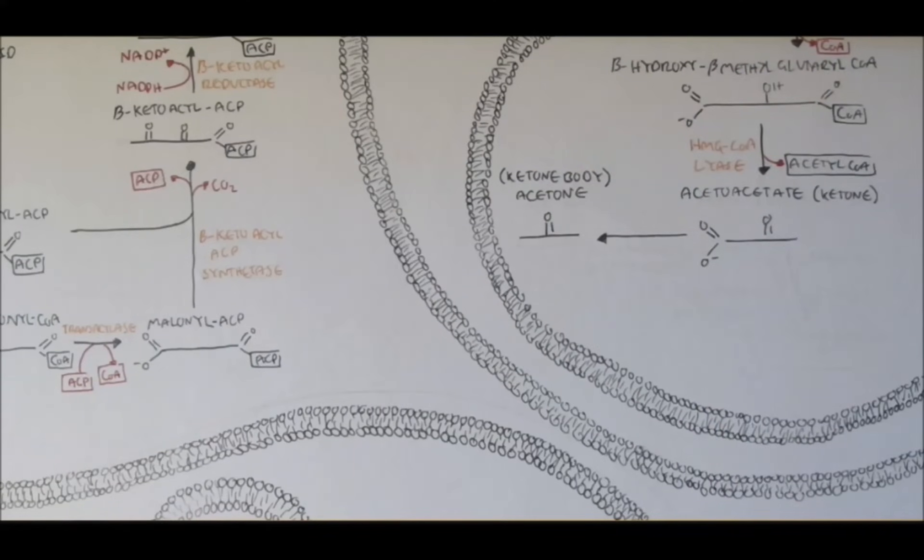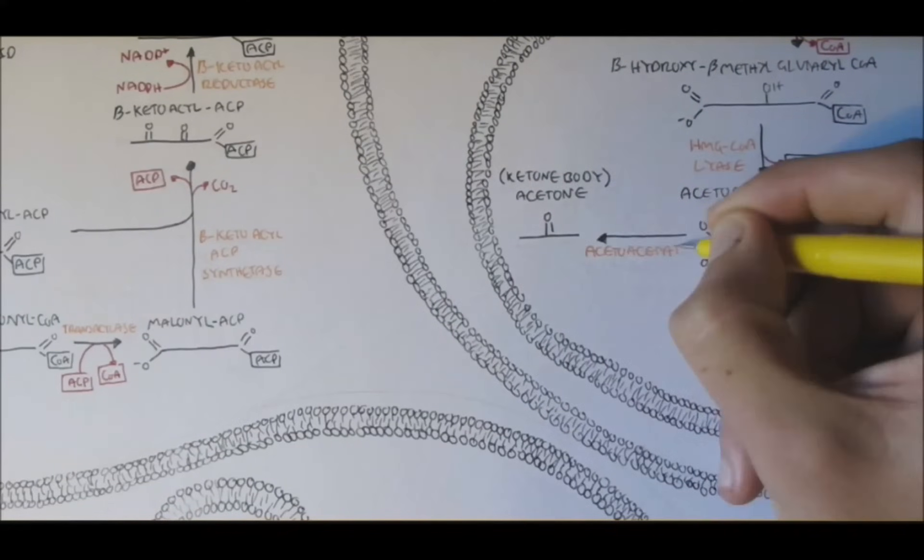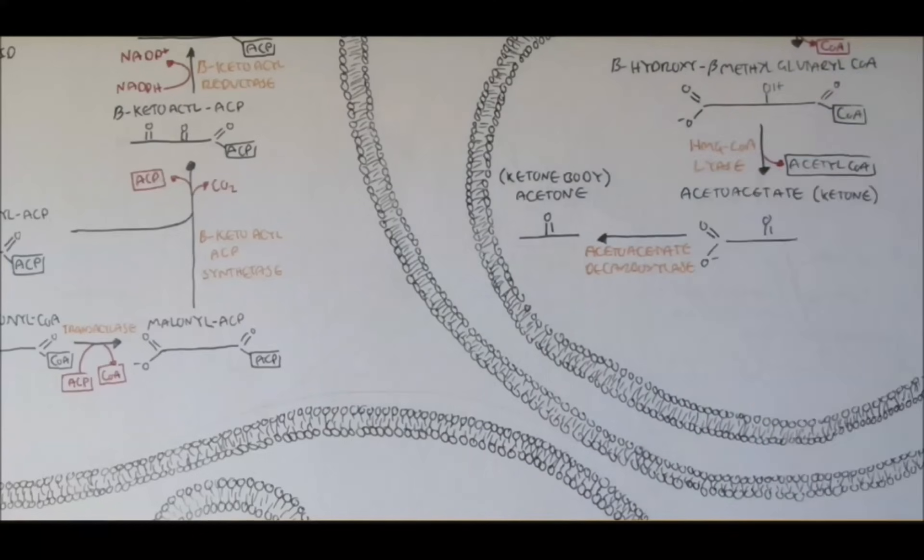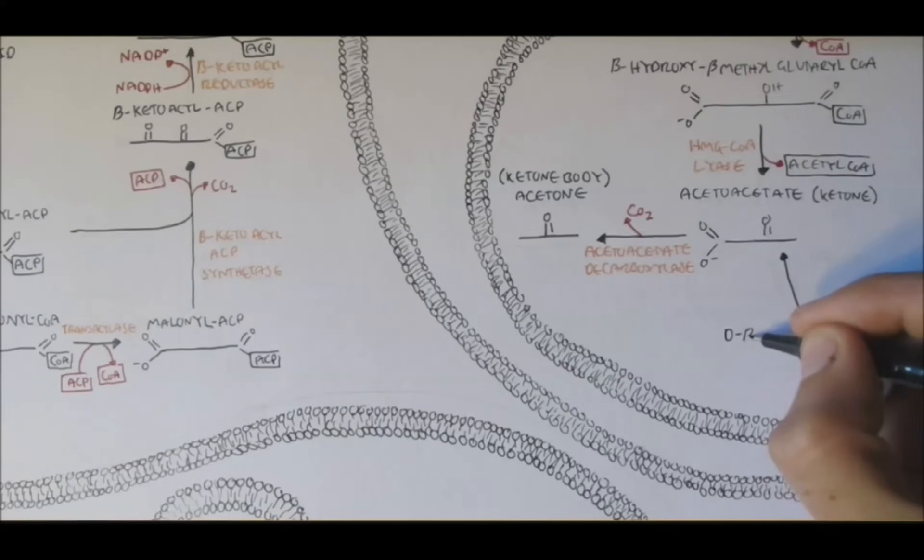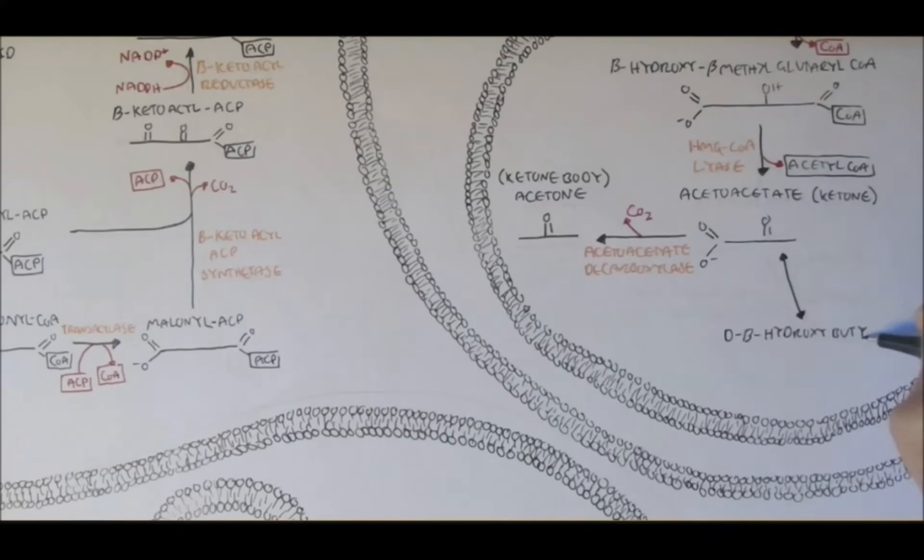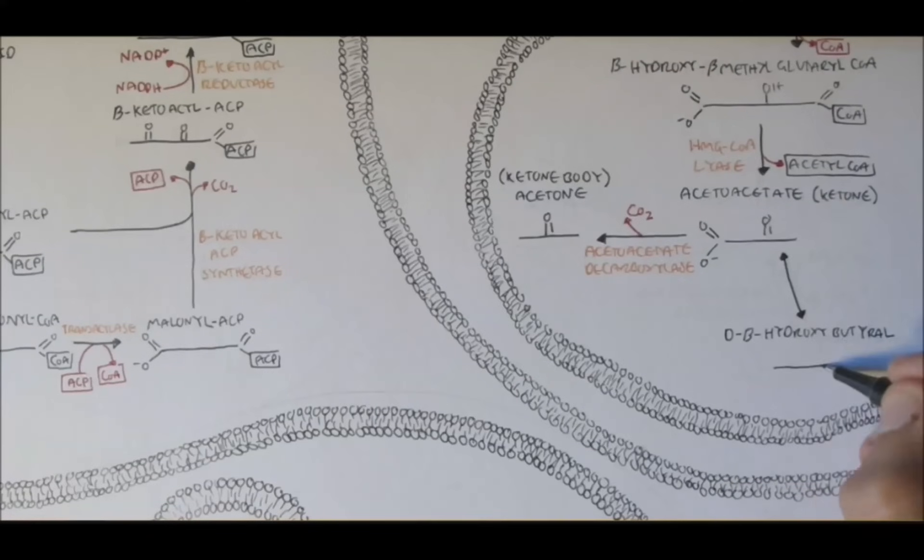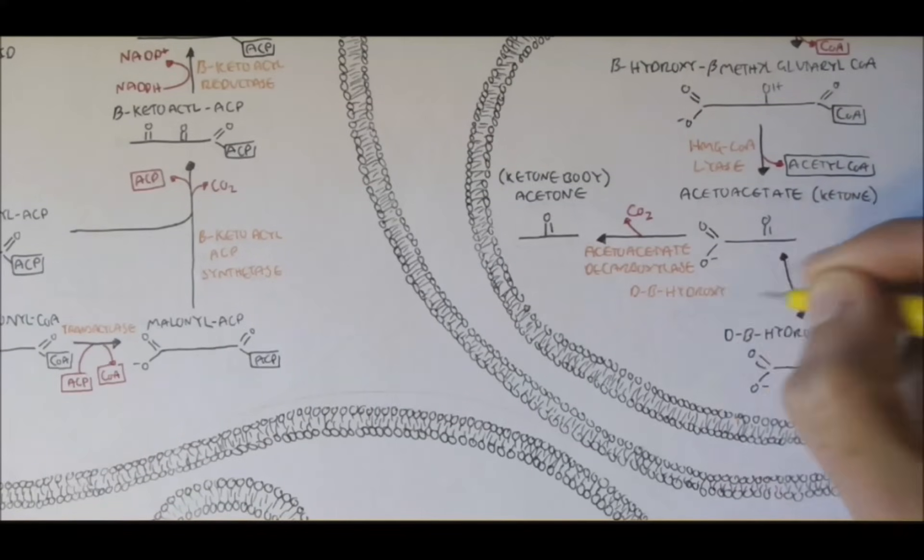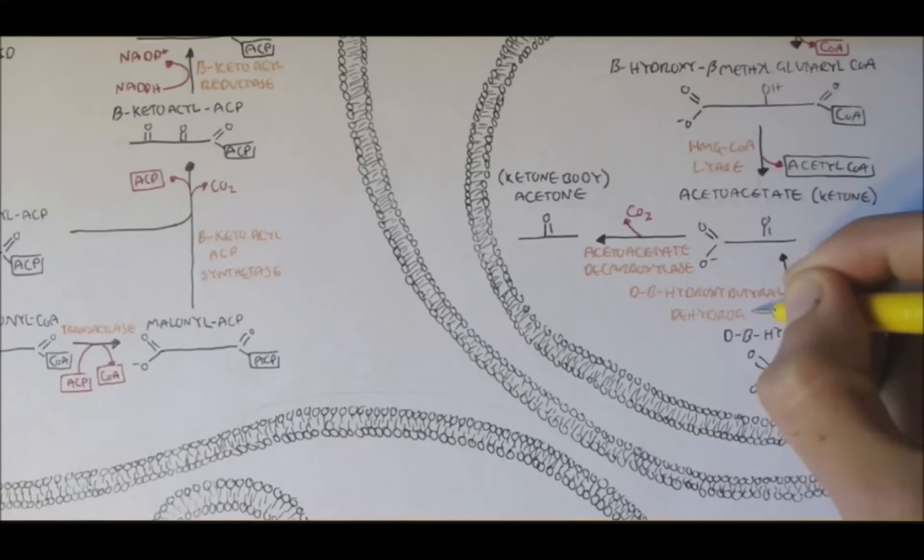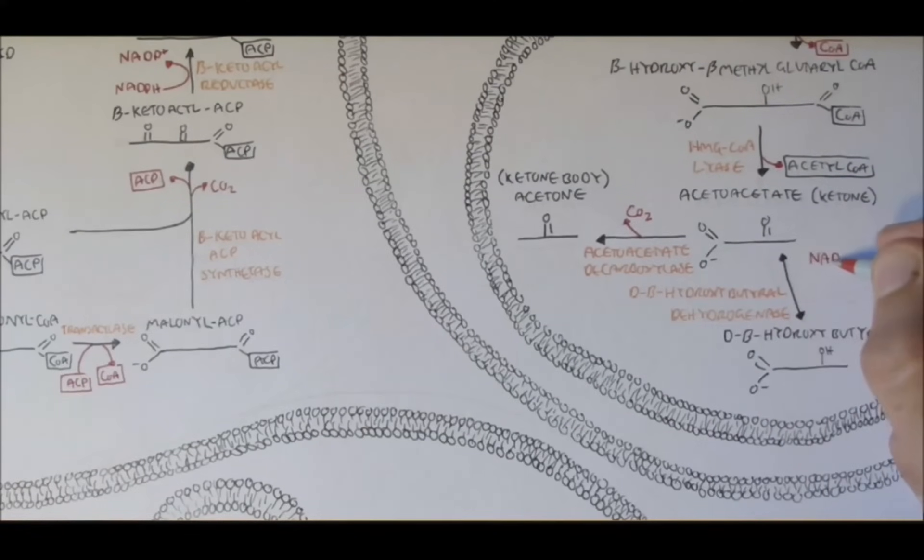Acetoacetate can also decarboxylize to acetone, which is a ketone body, through acetoacetate decarboxylase, removing a carbon dioxide. Alternatively, acetoacetate can be reduced to D-beta-hydroxybutyl, which is another ketone body, by the enzyme D-beta-hydroxybutyl dehydrogenase. NADH is oxidized to NAD.